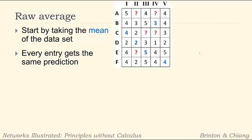We're literally just going to take the mean of all the values. Add them up and divide by the total number. Sounds really simple. Every entry is going to get the same prediction. We'll do that right now.